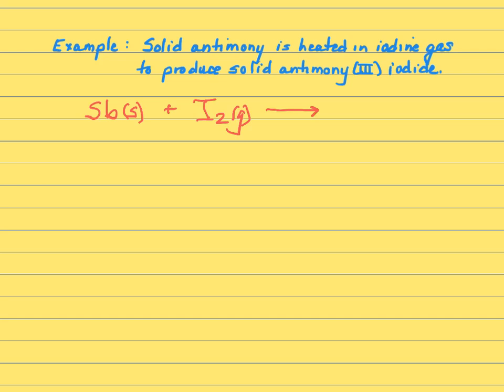I've got my arrow and it says heated, so I've got a delta over there, and then antimony three iodide. So that's Sb three plus and I minus. So SbI3, and it says it's a solid. So now we've done everything except balance it.